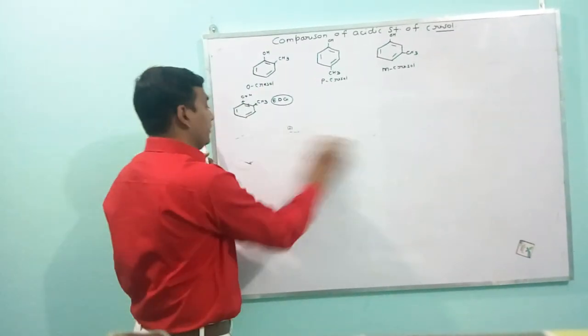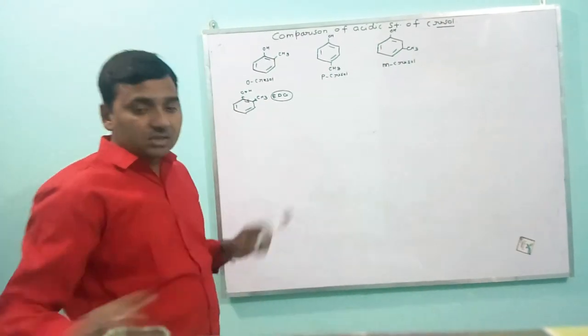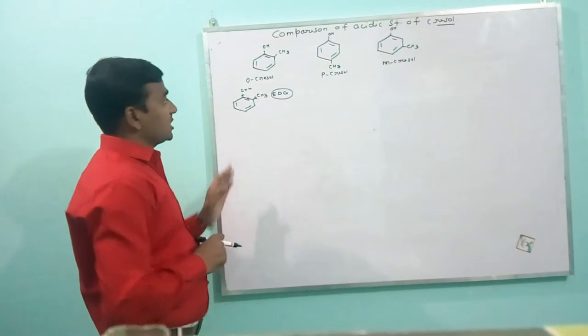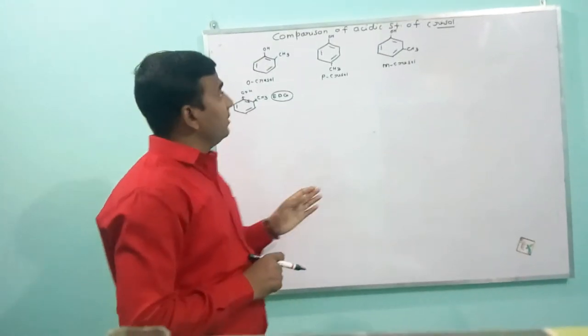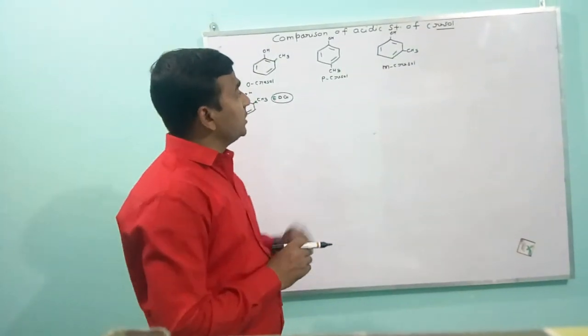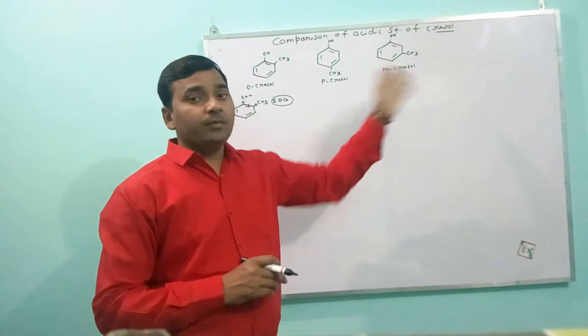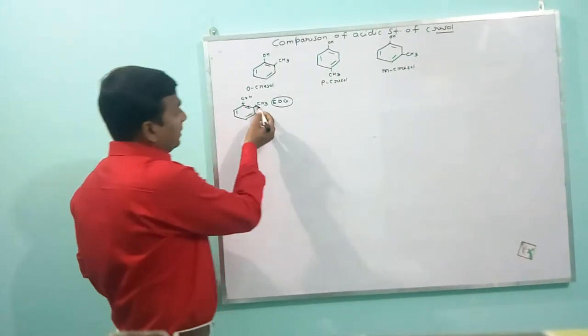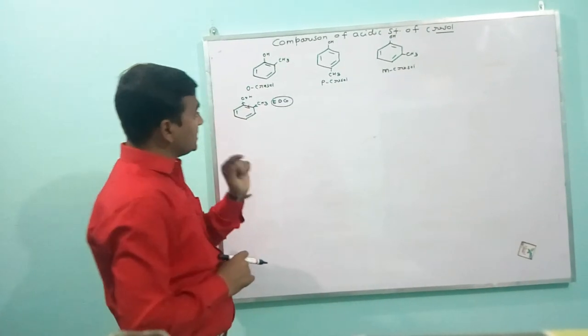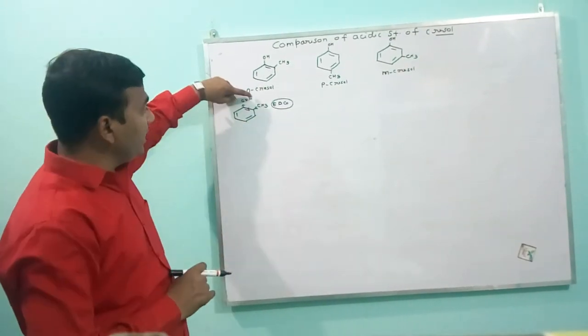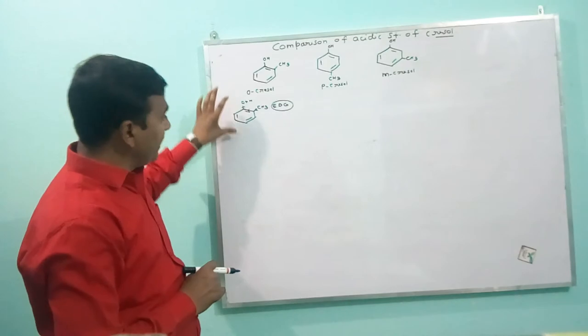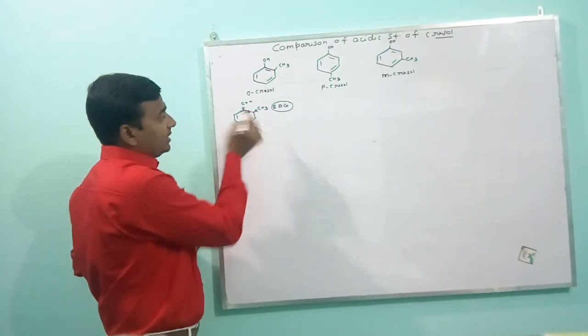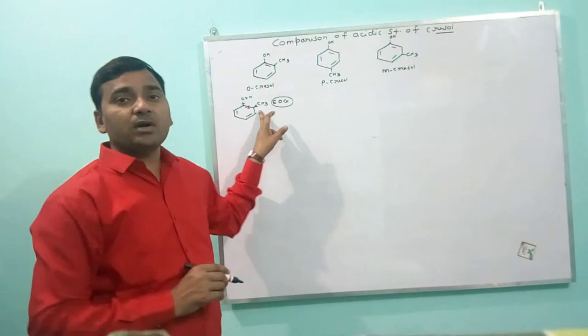Hence, we can say that phenols are more acidic than Cresols. Now, we will discuss the comparative acidic strength of ortho, para and meta cresols. Here, the methyl group increases the electron density between O and H group in cresols due to inductive effect as well as hyperconjugation effect.